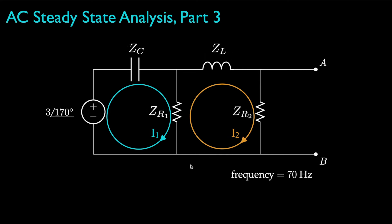For the capacitor, it's negative J divided by 2 times pi times the frequency times the capacitance. For the inductor, it's J times 2 times pi times the frequency times the inductance. And for the two resistors, it's simply their resistance.